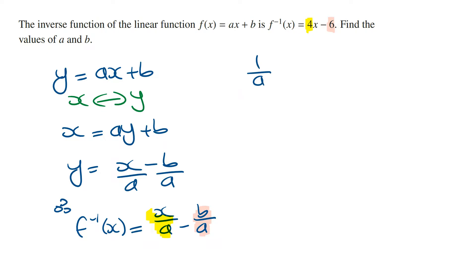And so if we let 1/a equal 4, solving for a, we're going to get a equals 1/4. And if we let b/a equal 6, then we know that b is going to equal 6 times a. We know that a equals 1/4, and so this is going to be 6 times 1/4.